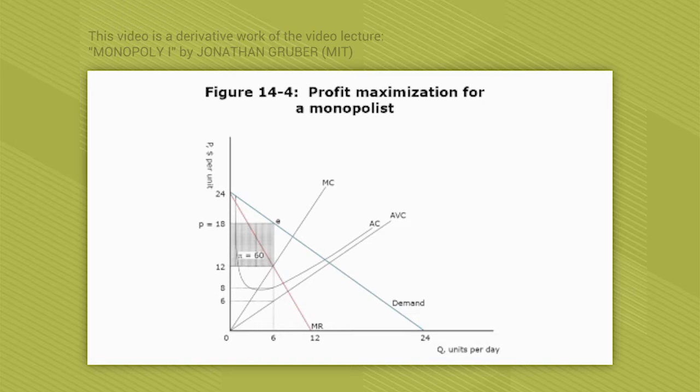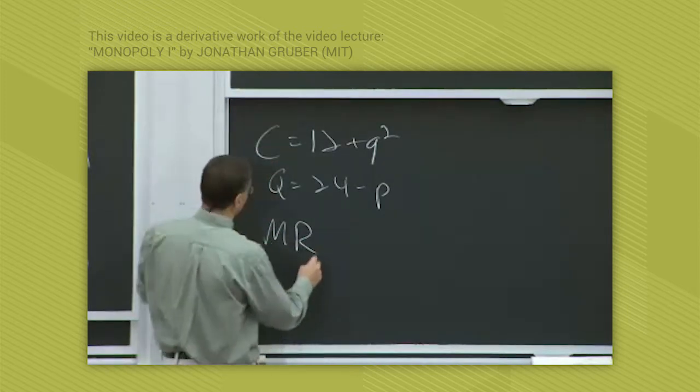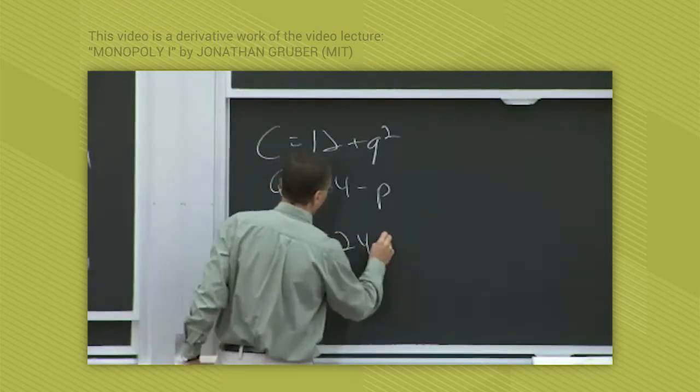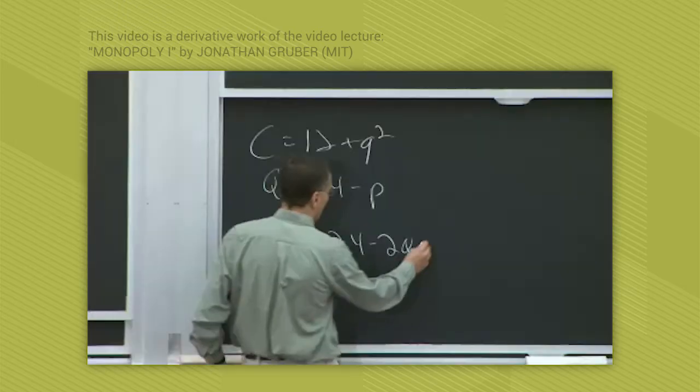Now recall the rule that profit is maximized where marginal revenue equals marginal cost. Well, we know marginal revenue, we derived that above, is 24 minus 2q. What's marginal cost with this expression? Well, marginal cost, differentiation of the cost equation, which is 2q.